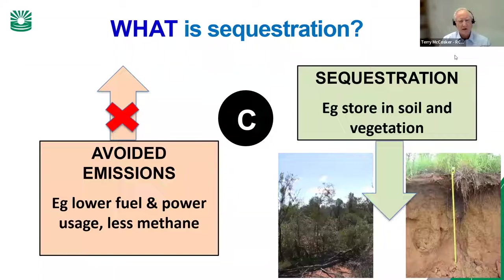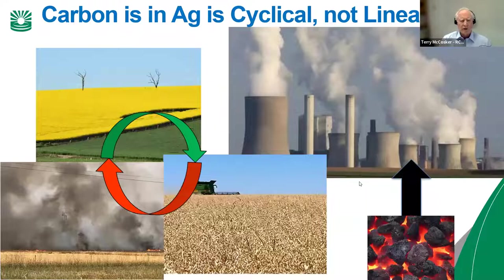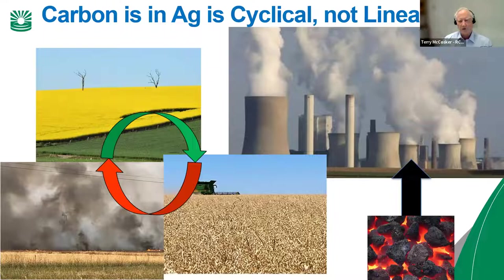If we lower fuel and power usage, we're avoiding emissions, and coming down the track there'll be some carbon credits available for that. But what's happening in the market at the moment is that it's really starting to differentiate between avoided emissions and sequestration. Sequestration is putting carbon away in vegetation and in soils. In general society there's a view that carbon is linear, but in agriculture we work within the carbon cycle.